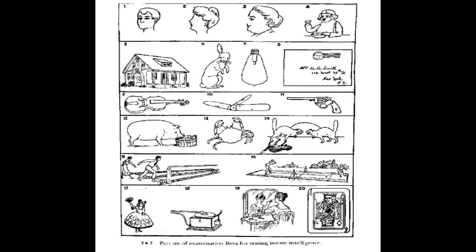This first significant intelligence test offers us some examples of cultural and language bias. Take a moment to look at this image — this is an example of what they would ask incoming immigrants at Ellis Island. Imagine it's 1903, and you're a peasant from northern Italy or a farmer from Czechoslovakia, asked to fill in what is missing in these images. A farmer would not be playing tennis and would have no notion of the sport or that the net is missing.